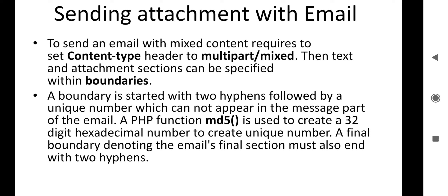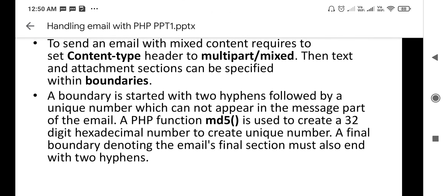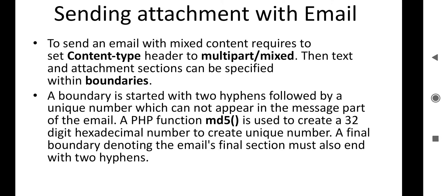To create a unique number, you use the md5() function. A final boundary denoting the email's final section must also end with two hyphens. The attached file should be encoded with the base64_encode() function for safer transmission, and then split into chunks using the chunk_split() function. By using these functions — base64_encode() and chunk_split() — you can easily send emails with attachments. Thank you.